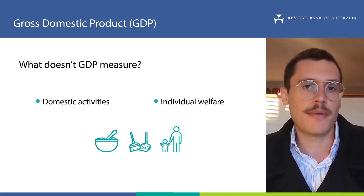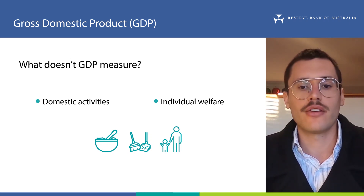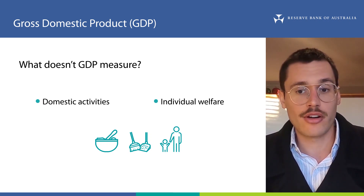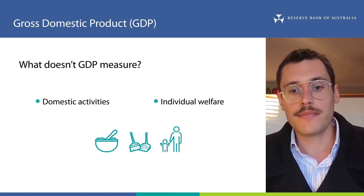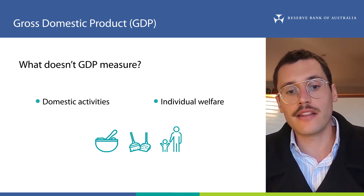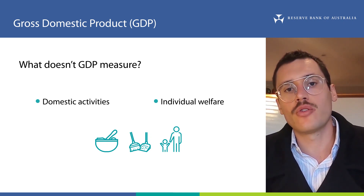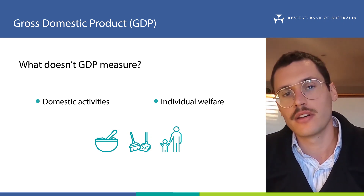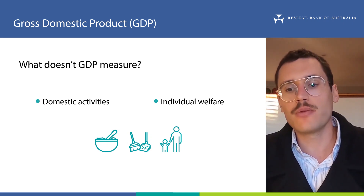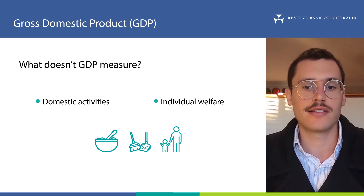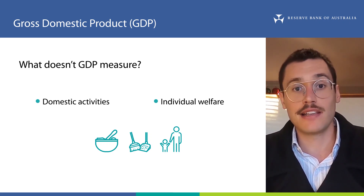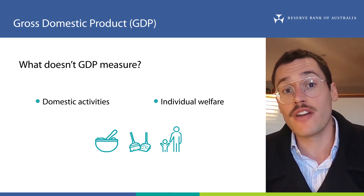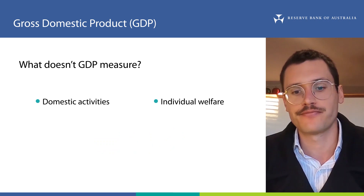For example, imagine two scenarios: one where everyone in Australia earned the same income, and another where one person earned all the income in Australia. GDP-I would be the same in both of these instances, despite these two versions of Australia being very different.